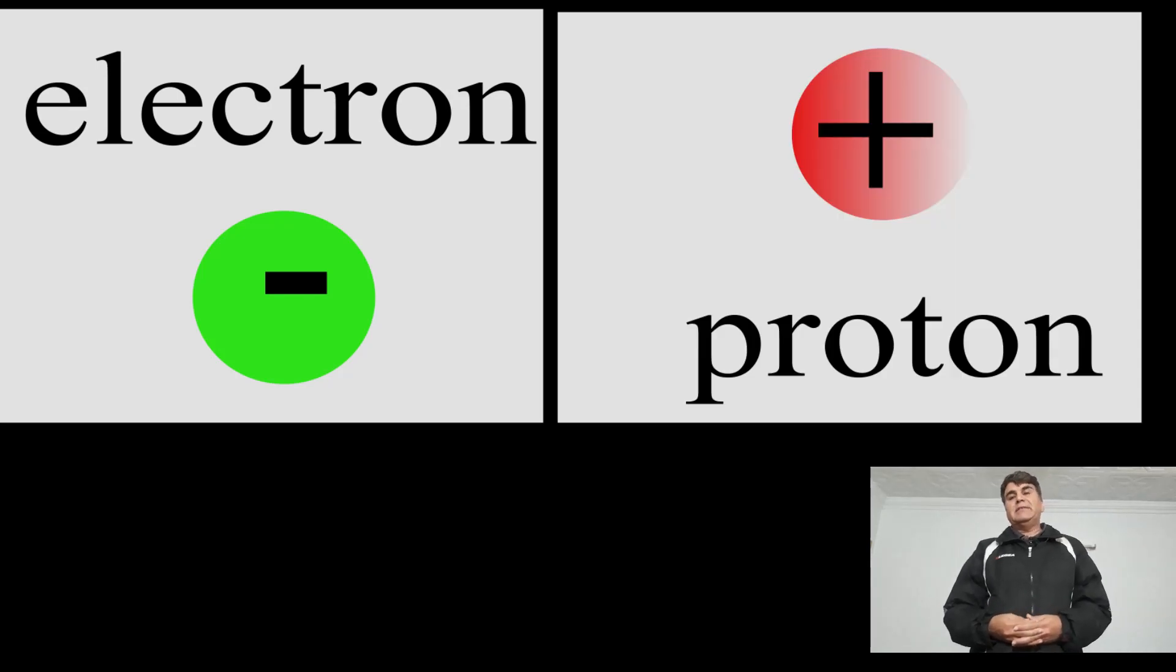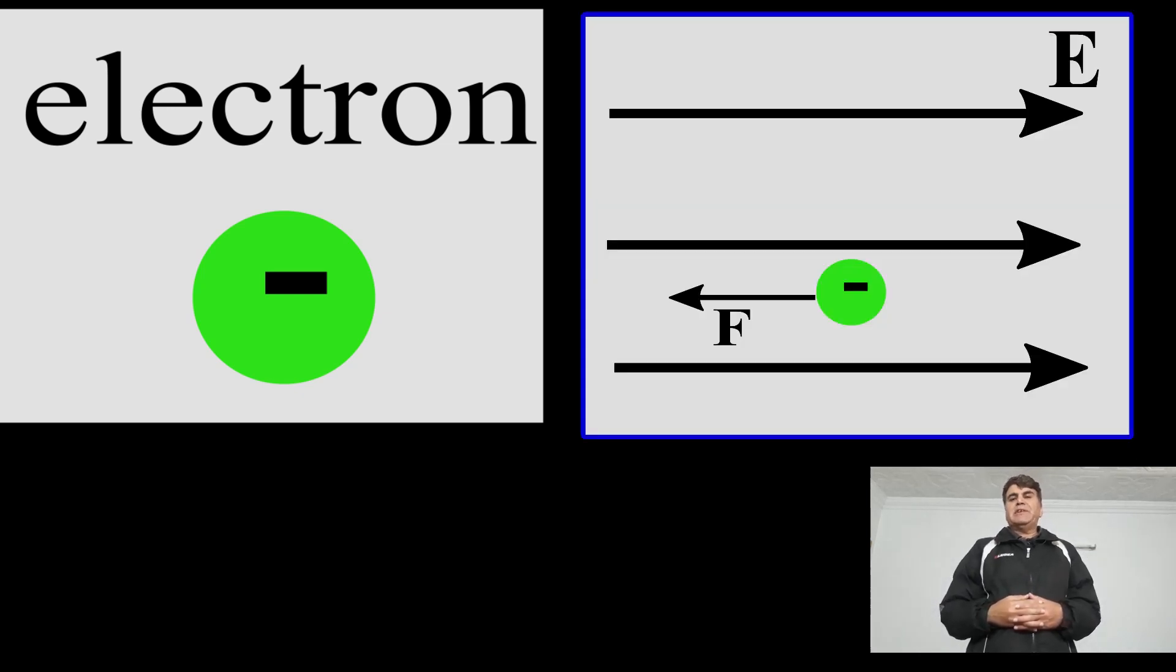Here it was told that electron carries negative charge and proton carries positive charge. It was also told that the magnitude of charge on these particles is equal. Probably the reason for assigning negative charge to electron is the direction of force it experiences, opposite to the direction of the applied electric field.